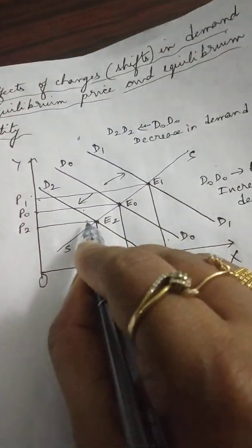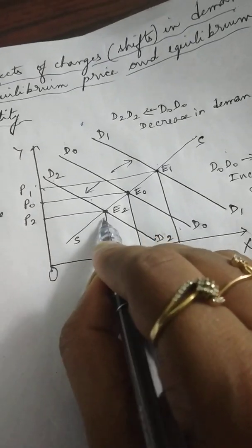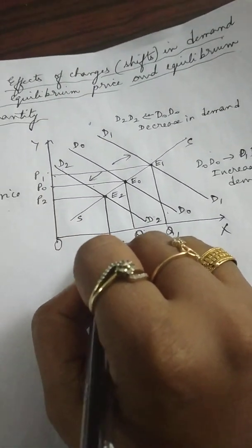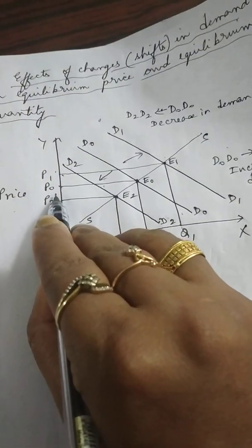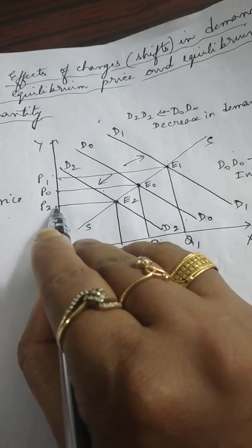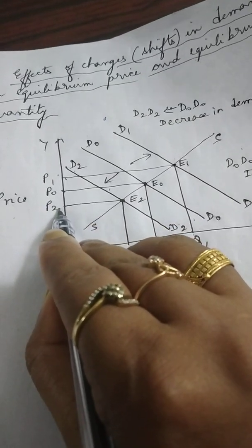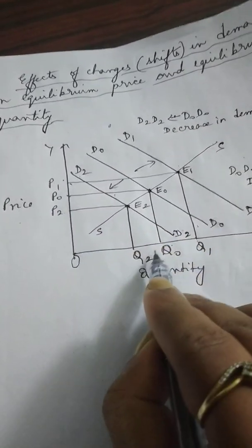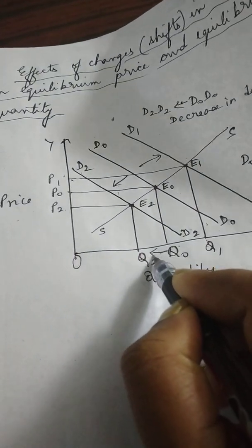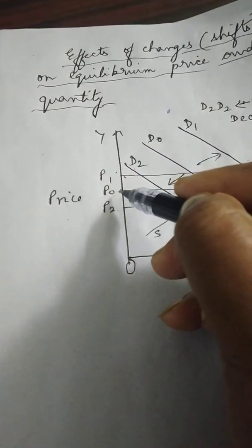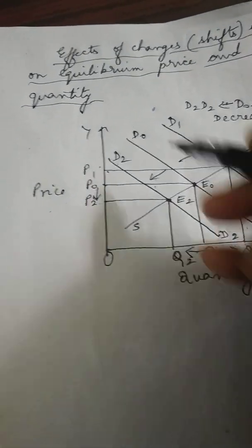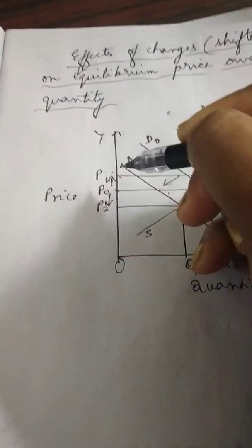The new equilibrium point will be E2. The new equilibrium quantity is Q2 and the new equilibrium price is P2. Equilibrium price has fallen from P0 to P2 and equilibrium quantity has also fallen from Q0 to Q2 — here it has fallen, and there it had increased as indicated by the arrow.